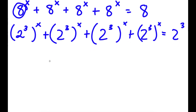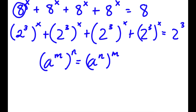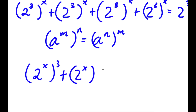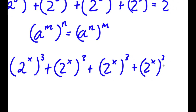Now, if I have something in the form a to the power of m to the power of n, this is the same thing as a to the power of n to the power of m. So 2 to the power of 3 to the power of x is the same thing as 2 to the power of x to the power of 3. So now I have 2 to the power of x to the power of 3, four times, equal to 2 to the power of 3.